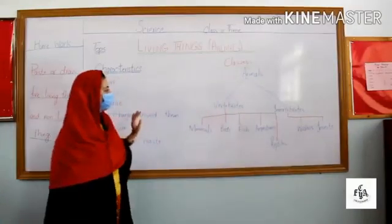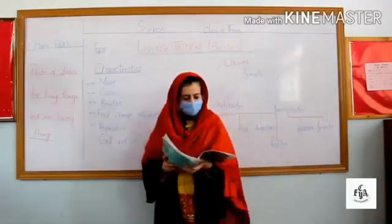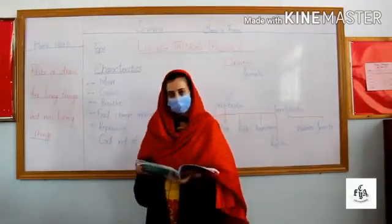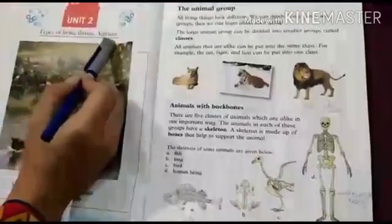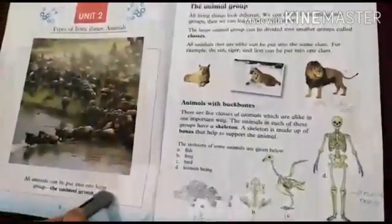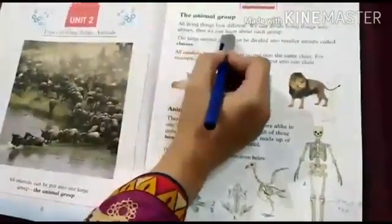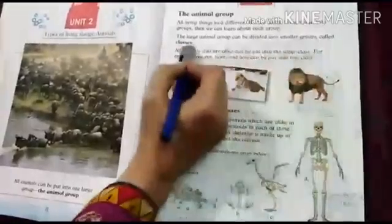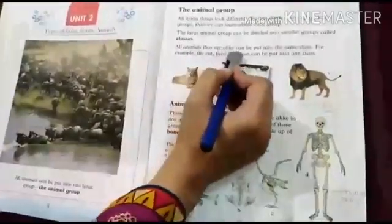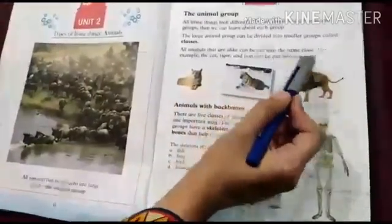Now we are starting the reading of this chapter — page number 8, types of living things: animals. All animals can be put into one large group: the animal group. We can divide living things into groups to learn about each group. The large group 'animal' can be divided into smaller groups called classes. All animals that are alike can be put into the same class — for example, the cat, tiger, and lion can be put into one class.